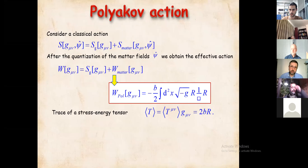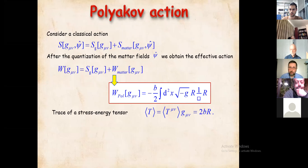Let me remind you of the Polyakov action. If you consider some matter field — massless scalar fields — and quantize it, after quantization the contribution to the action of these massless scalar fields gives an effective action of the Polyakov form with some coefficient b, which is 1 over 24π for a single scalar field. The variation of that action gives a stress-energy tensor whose trace yields the trace anomaly.